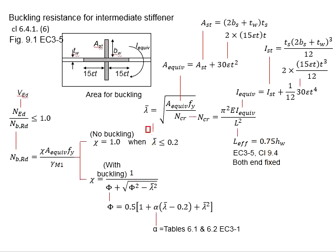You have to check for the slenderness ratio. If the slenderness ratio is less than 0.2, that means there won't be any reductions in terms of the axial resistance and the chi is taken as 1.0. However, if the slenderness ratio is more than 0.2, that means there will be buckling and you need to quantify the chi.